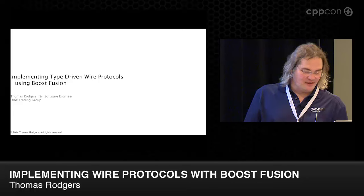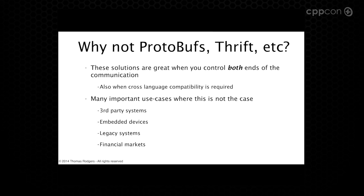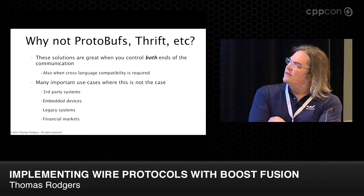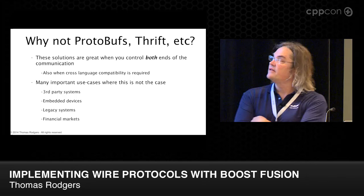The first question with any of this is why not use protobufs, thrift, or whatever. These are great when you control both ends of the communication, but there are many important use cases where this is not the case. We tend to run into third-party systems — financial exchanges. We also have latency-sensitive concerns, sometimes involving embedded devices. You could also potentially use this for legacy system interfaces where an off-the-shelf library and code generator like thrift or Google's protobufs isn't going to work for you.